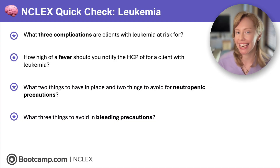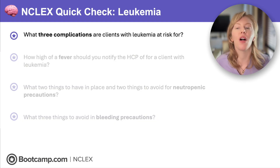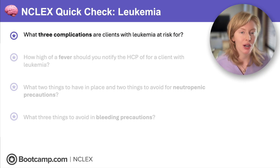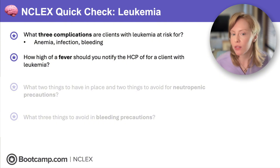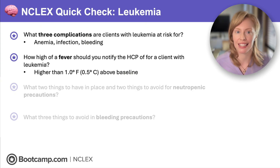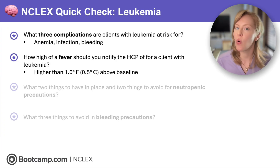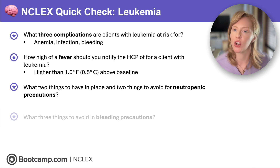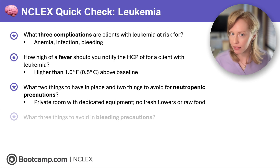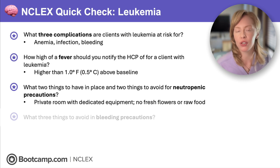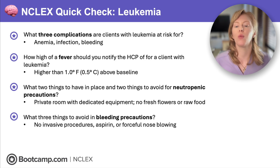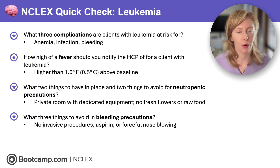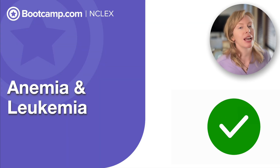NCLEX quick check on leukemia: What three complications are clients with leukemia at risk for? Pancytopenia causing anemia, infection, and bleeding. How high of a fever should you notify the healthcare provider of? Even one degree Fahrenheit or half a degree Celsius above baseline can indicate a life-threatening infection. For neutropenic precautions, what two things do you need in place and what two things do you need to avoid? Private room with dedicated equipment, and no fresh flowers or raw food. For bleeding precautions, what three things should you avoid? Invasive procedures like IM injections, aspirin, and forceful nose blowing.